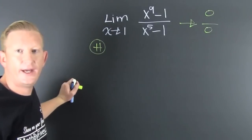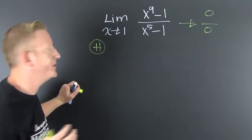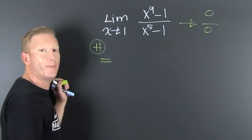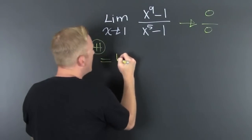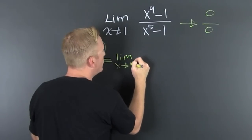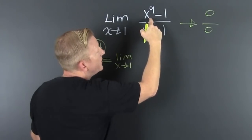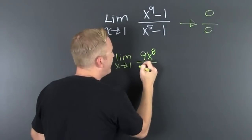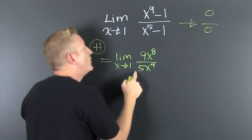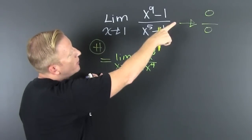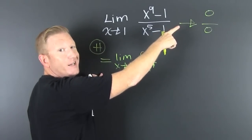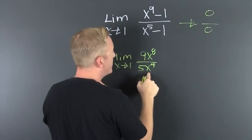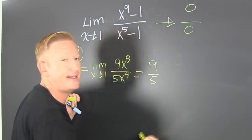Let's go. I would really appreciate if you would draw an H and circle it, letting me know that you are performing L'Hopital's rule. That says this is equal to the limit as x goes to 1 of the derivative of the numerator — 9x to the 8th — divided by the derivative of the denominator — 5x to the 4th. If it's 0 over 0 or infinity over infinity, then you can use L'Hopital's rule. Run that limit: put a 1 in, and you get 9 over 5.